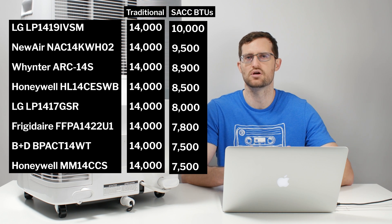On the flip side of things, you'll notice that the least efficient units are in the 7,500 BTU range. So already you can see a large discrepancy between the most efficient units and the least efficient units.